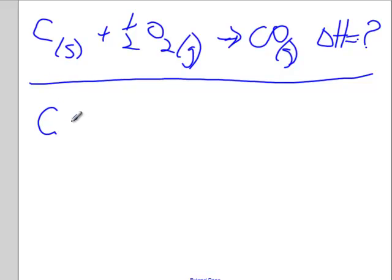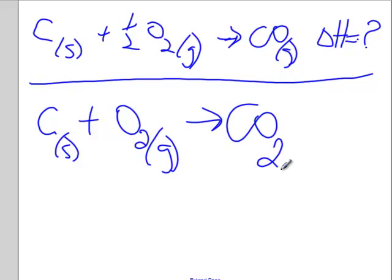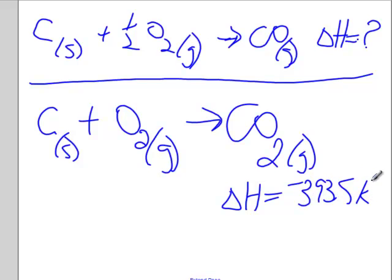We can do carbon solid plus oxygen gas goes to CO2 gas. Let's say we could measure the delta H for that reaction as negative 393.5 kilojoules.